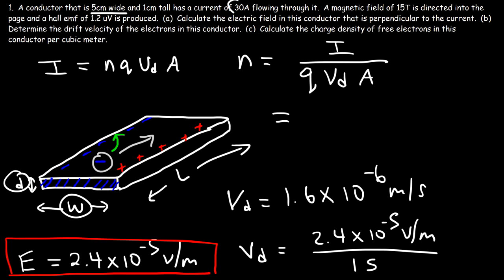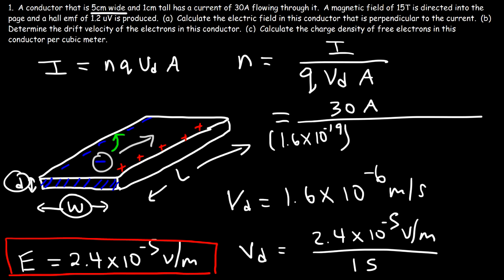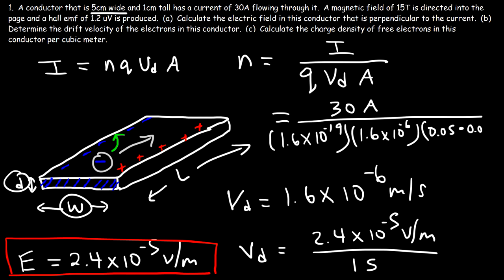Now we can calculate N. It equals the current (30 A) divided by the charge of an electron, times the drift speed (1.6 × 10⁻⁶ m/s), times the cross-sectional area: width (0.05 m) times thickness (0.01 m). The result is N = 2.3 × 10²⁹ electrons per cubic meter. That is the charge density of free electrons in this conductor.